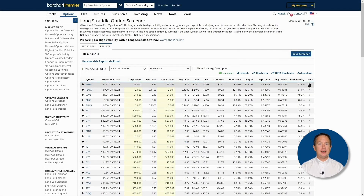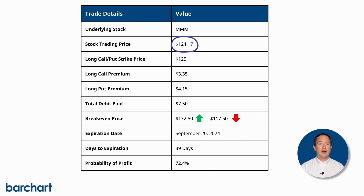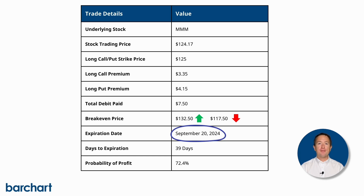Now on to the examples. Since long straddles usually have about a 50% chance of profitability, the very first trade here for 3M looks very promising, so I'll use that in today's example. We see that 3M currently trades at $124.17 at the time of the screen. For this trade, you'd buy a call option and a put option at the $125 strike for a total premium of $7.50 a share, or $750 per contract. Both options expire on September 20th.